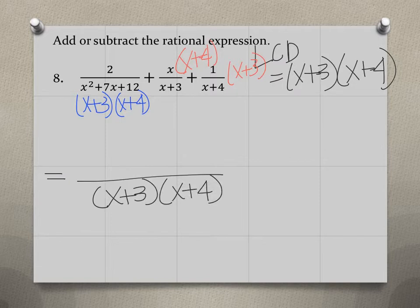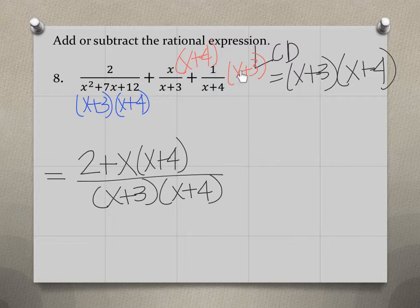Then I'm going to focus on the top. So I have the 2. I'm going to just write that here. Now plus, let's write our second numerator, x times x plus 4. Then I have plus 1 times x plus 3. So I'm just going to write plus x plus 3.